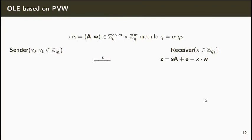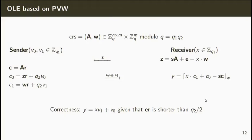The receiver will compute the vector Z as before using X as the input. The sender will encrypt again V0 and V1 under the different public keys and send this ciphertext to the receiver. The receiver will compute the value X times C1 plus C0 minus S times C and reduce it modulo Q1. As we've seen in the PVW case, the value obtained by the receiver is a linear combination of V0 and V1.